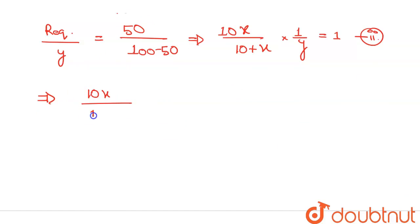10x over 10 plus x times 4 over x is equals to 1. From here x is equals to 30 ohms.